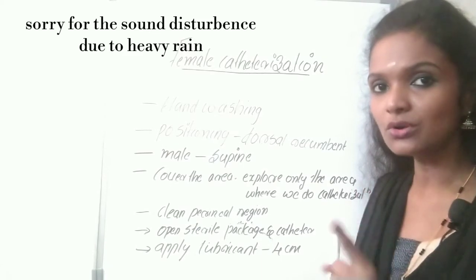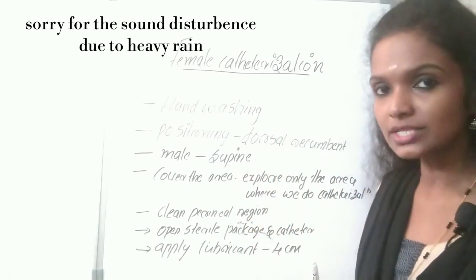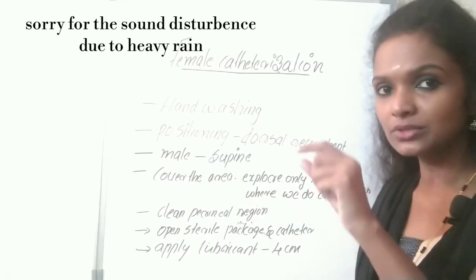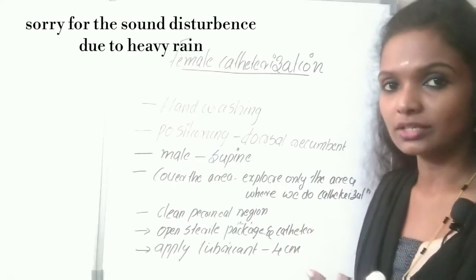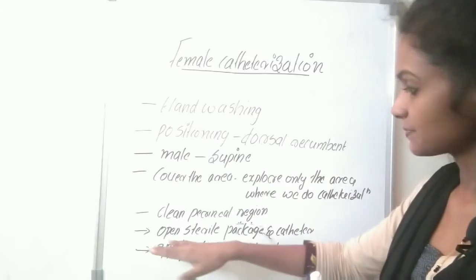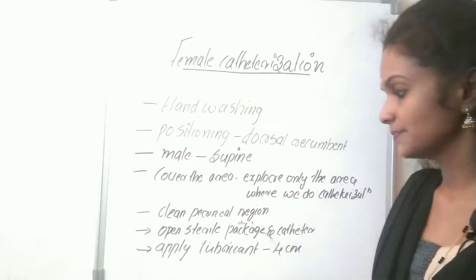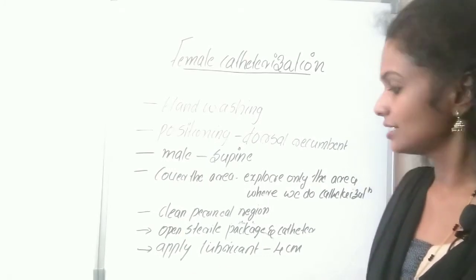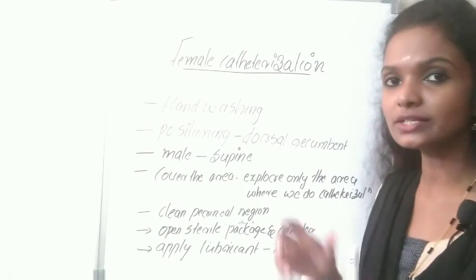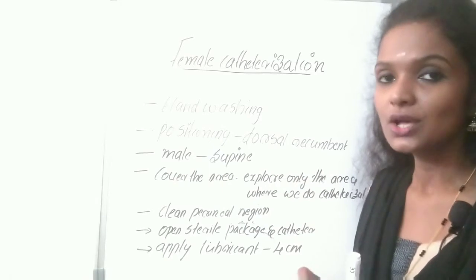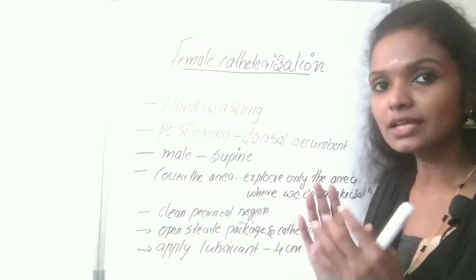Use only one cotton ball per swab — clean the right labia majora with one cotton ball and discard it, then clean the left labia majora with another cotton ball and discard it. Each part of the perineal region is cleaned with a separate cotton ball. After cleaning, open the sterile package and catheter, perform the gloving process, and apply lubricant from the tip of the catheter to 4 cm. Do not touch the part of the catheter that will go inside the bladder.